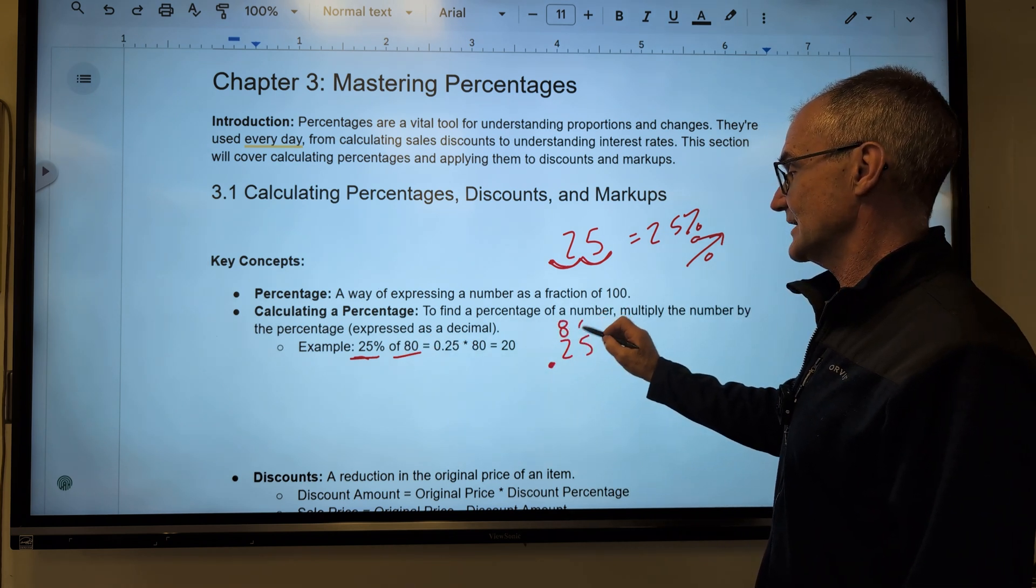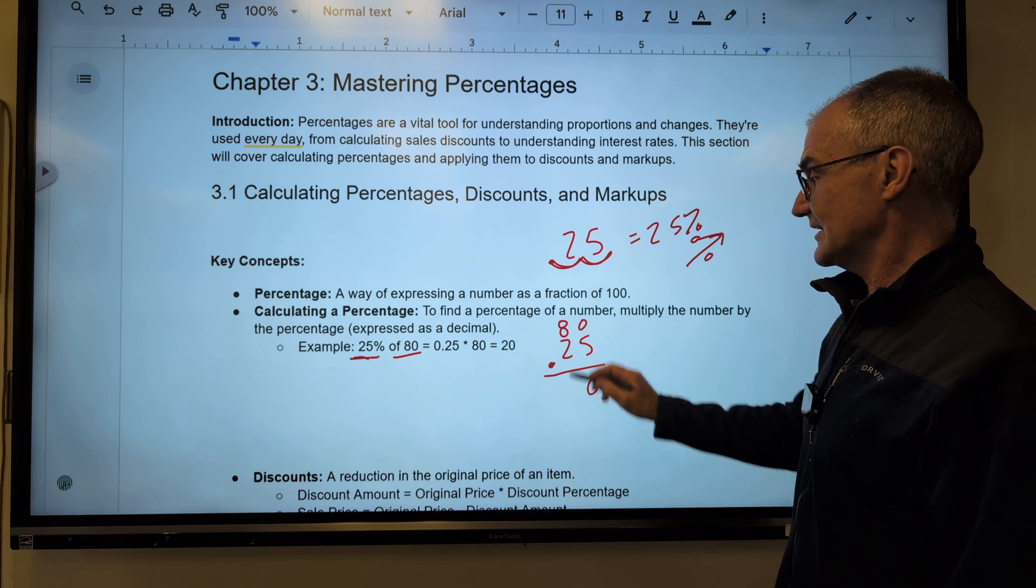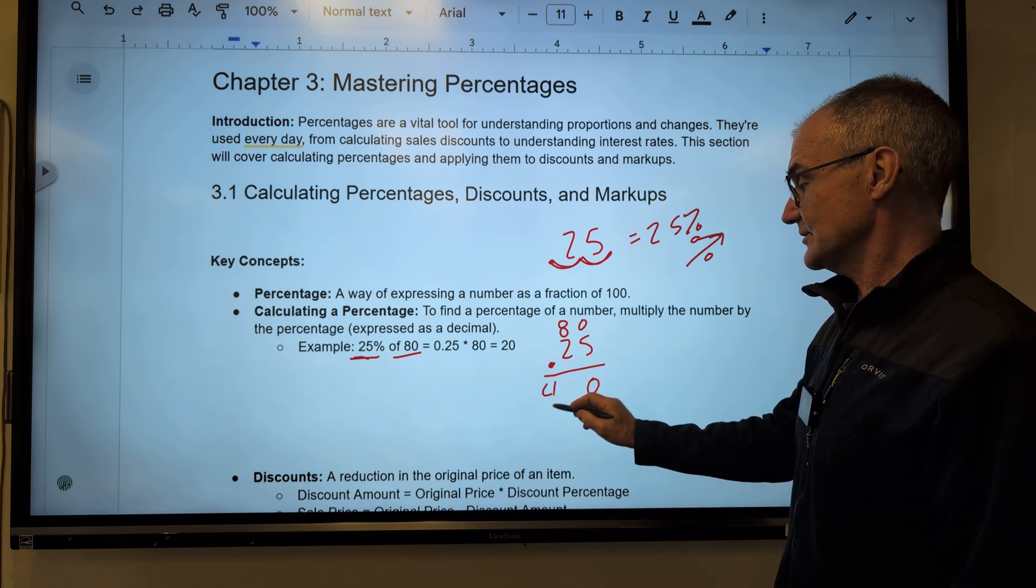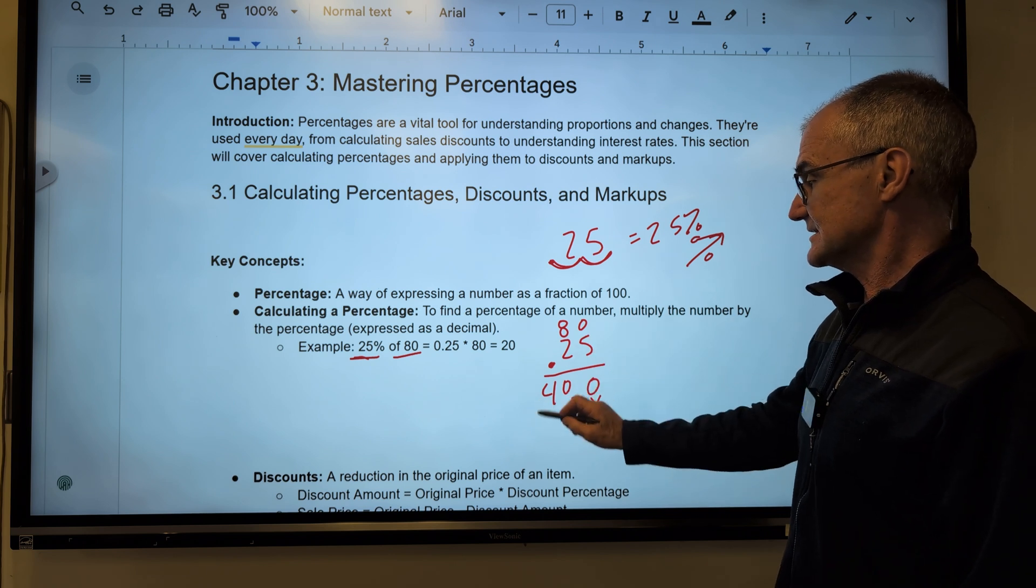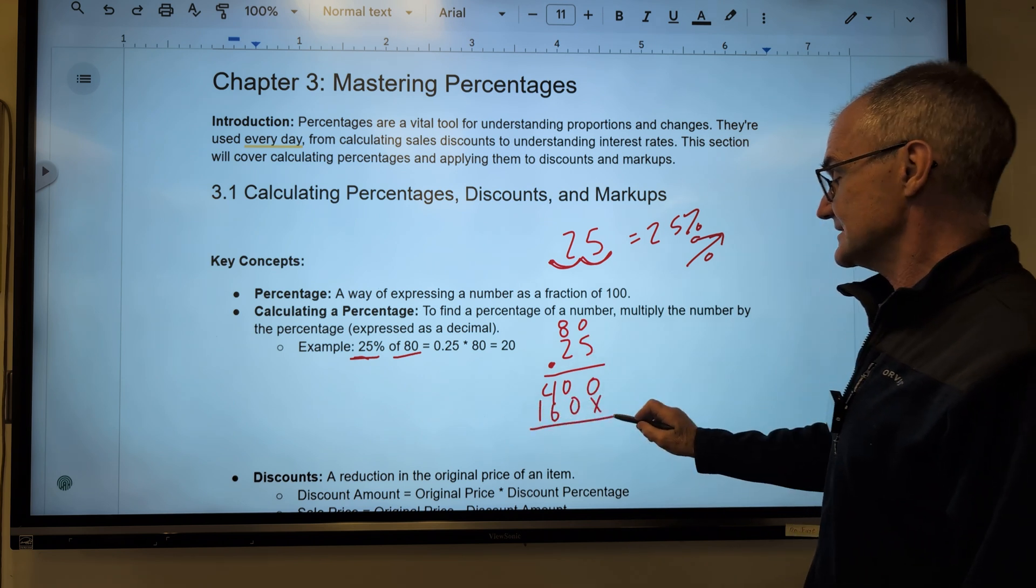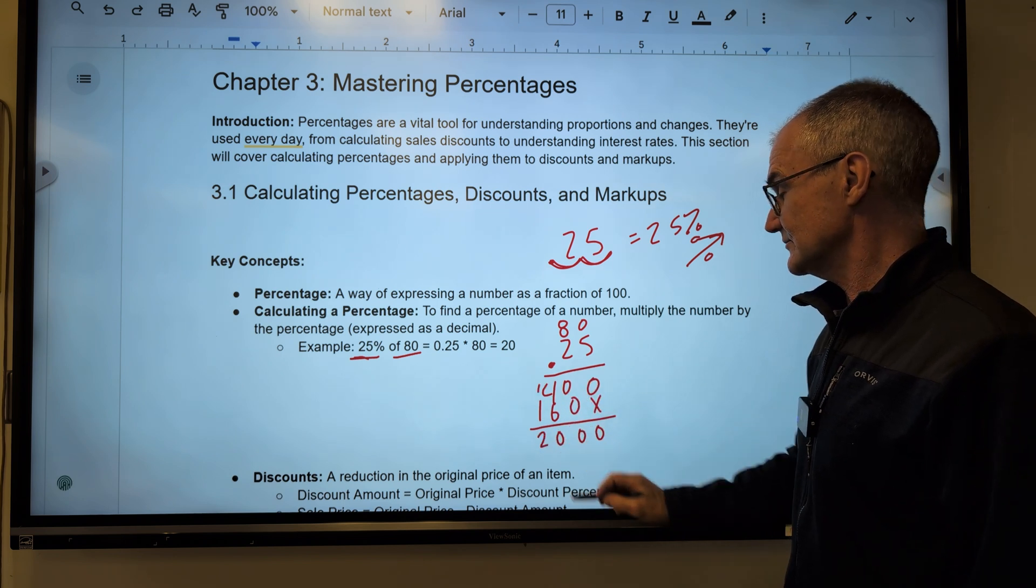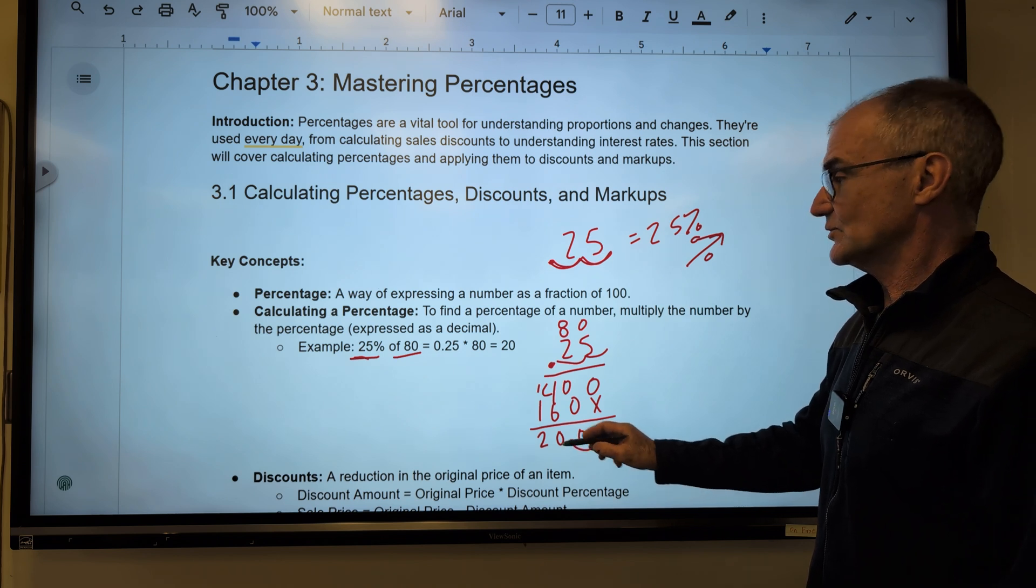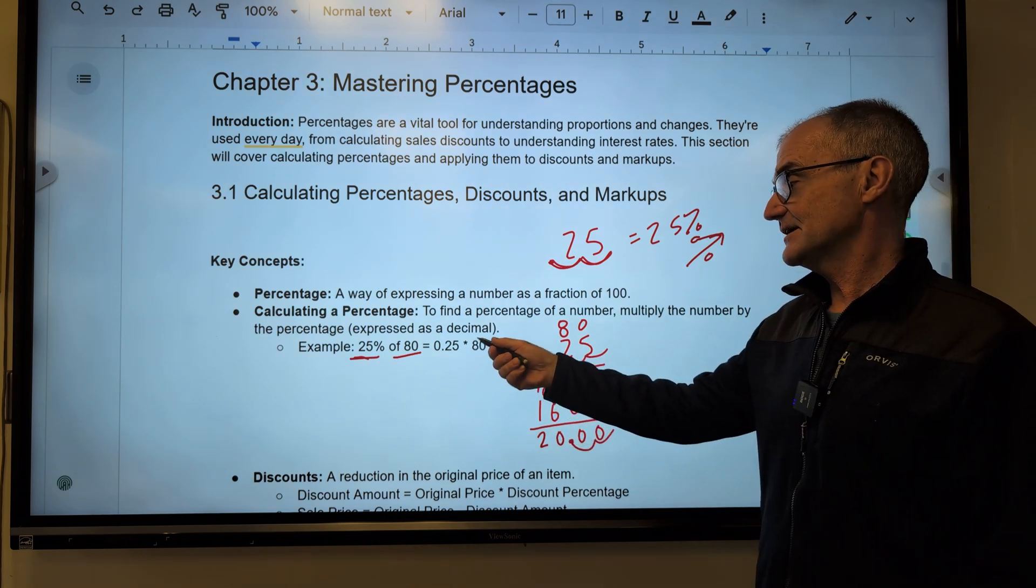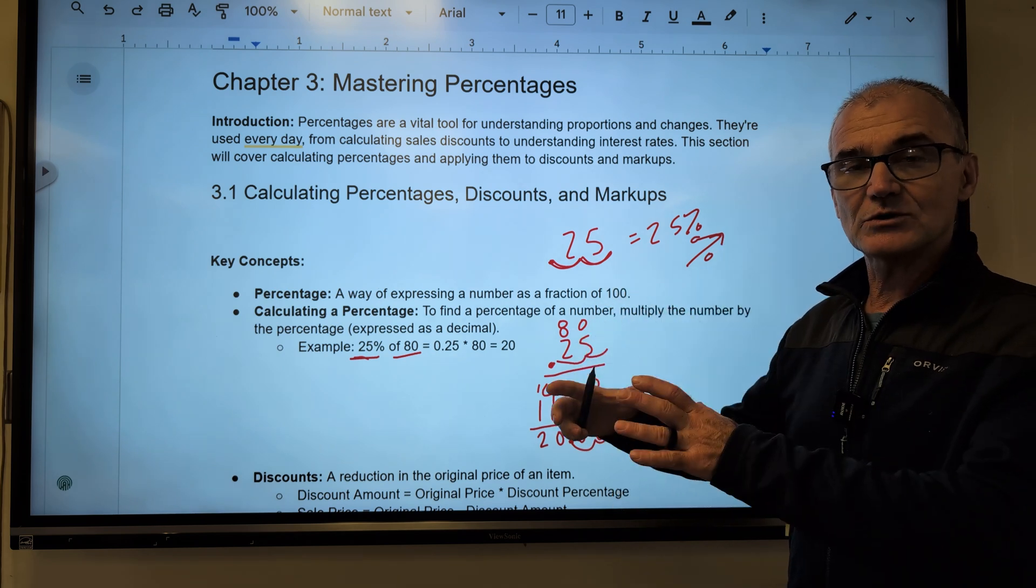So I have to multiply that 0.25 and 80 together. Five times zero. Five times eight is 40. Placeholder, zero, 16. Then I add straight down, zero, zero, 10. Carry the one, two. And then I have my decimal over one, two. One, two. So 25% of 80 is equal to 20. And that kind of makes sense, right? If my whole is 80, a quarter of it would be 20 or 25%.